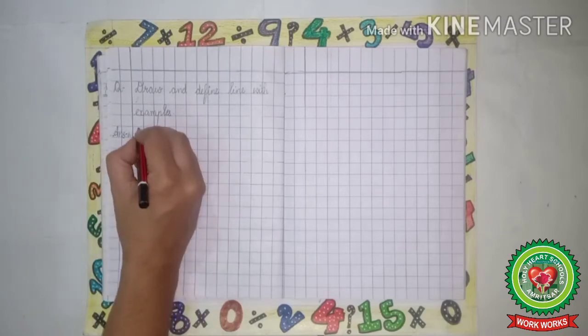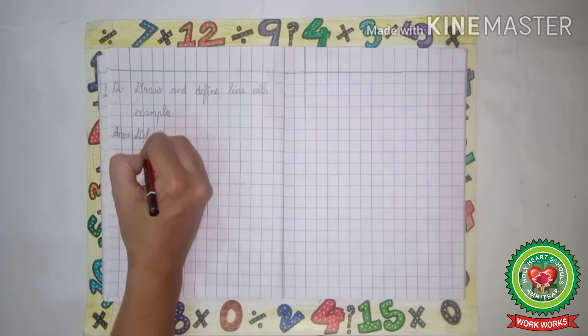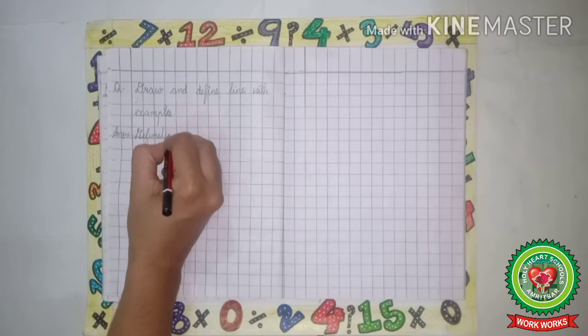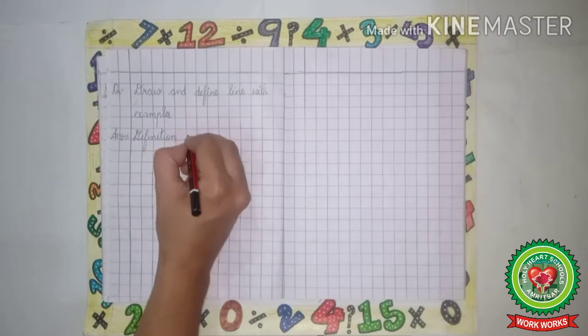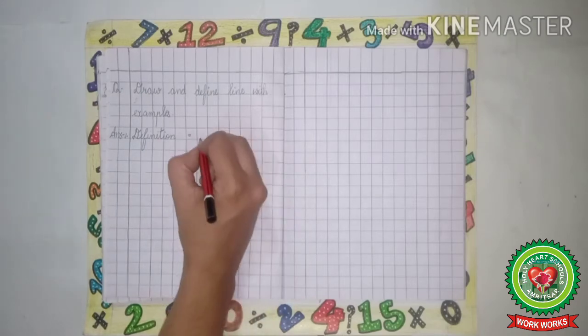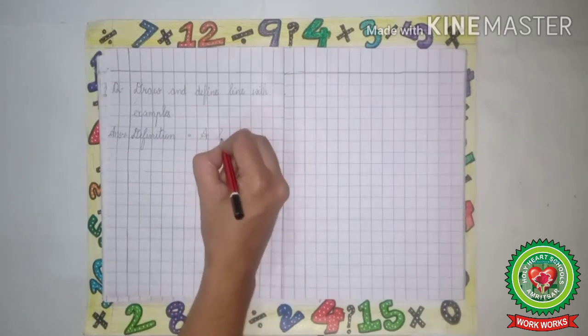First we will write definition, D-E-F-I-N-I-T-I-O-N, definition. Now what is the definition of line? That a line has no starting and ending point.